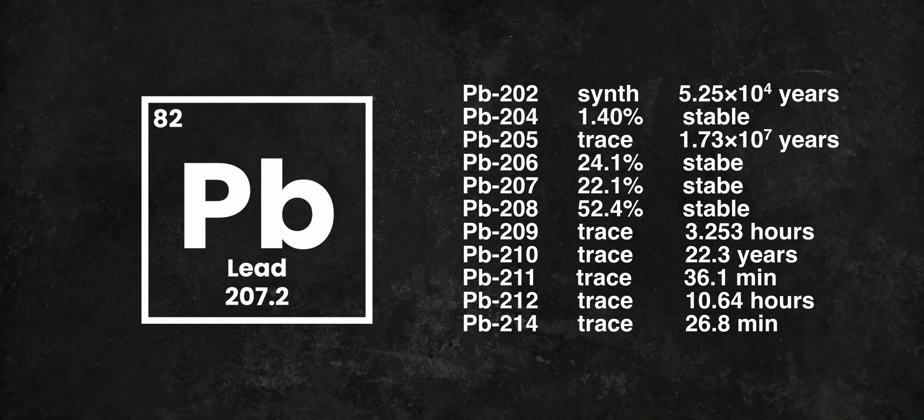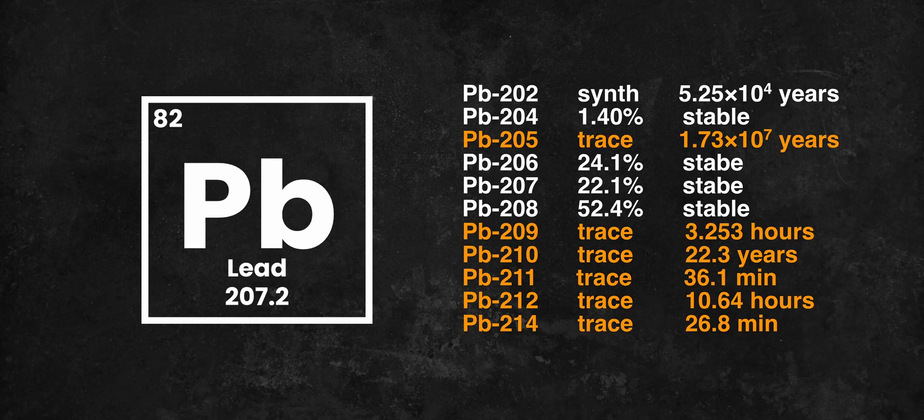In nature, there are several isotopes of lead, with the most common one being lead-208, which makes up 52.4%. This is followed by lead-206 at 24.1% and lead-207 at 22.1%. All of these isotopes are stable, but lead also has a few naturally occurring radioactive ones. These isotopes are found in the decay chains of uranium and thorium and aren't present in a typical lead ore.